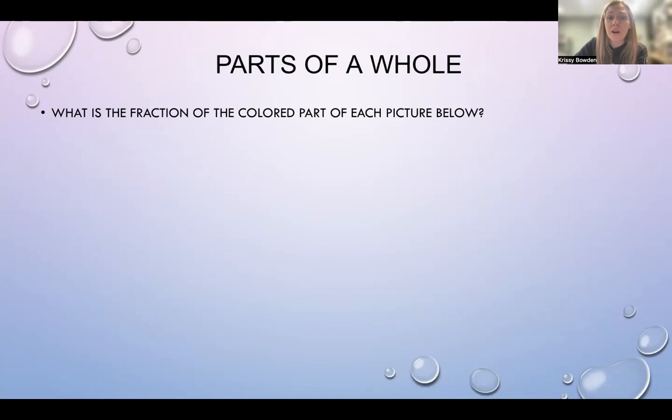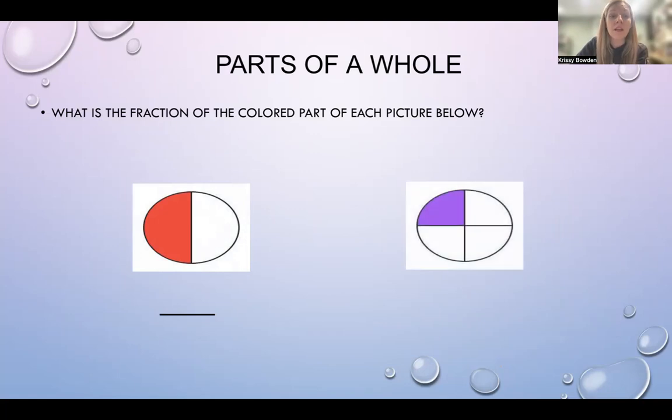What is the fraction of the colored part of each picture below? So you look at that one, you have two pieces in the circle. One is red. And then you have the next one, you have four pieces in the circle with the purple piece. One is colored purple out of all four. So if you look at that one, you can see one out of two. So you would actually write down one over two, one half. This one has one out of four, one on top, four underneath, and we call that one fourth or one quarter.